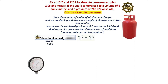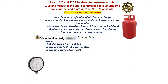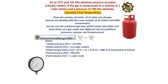Given: initial pressure P1 equals 125 kilo pascals; initial volume V1 equals 2 cubic meters; initial temperature T1 equals 15 degrees Celsius, which equals 15 plus 273.15, equal to 288.15 K converted to Kelvin. Final pressure P2 equals 700 kilo pascals; final volume V2 equals 1 cubic meter. We need to find the final temperature T2.